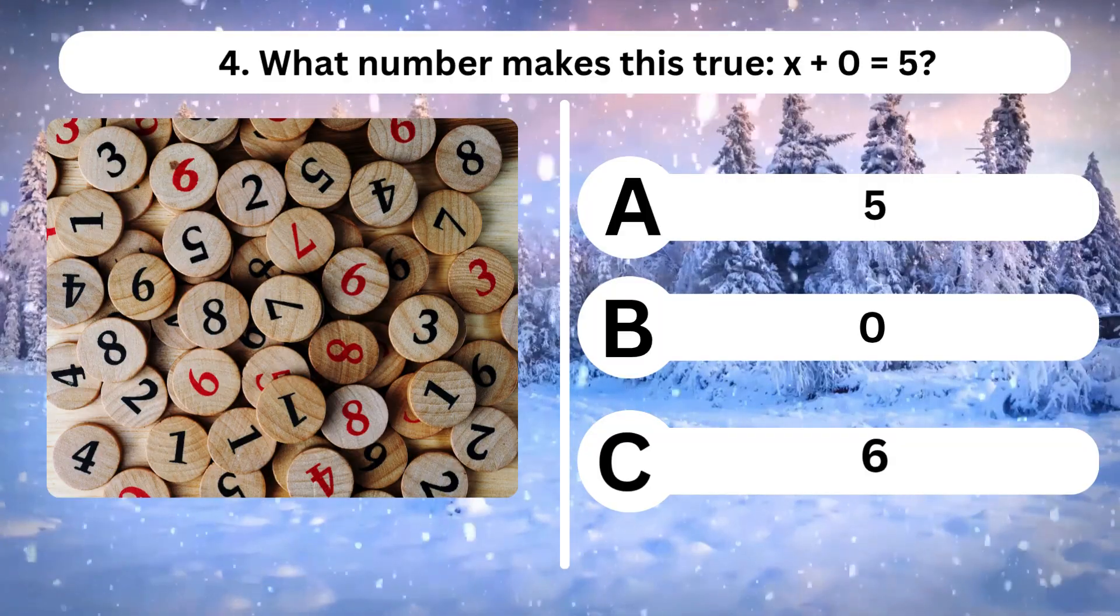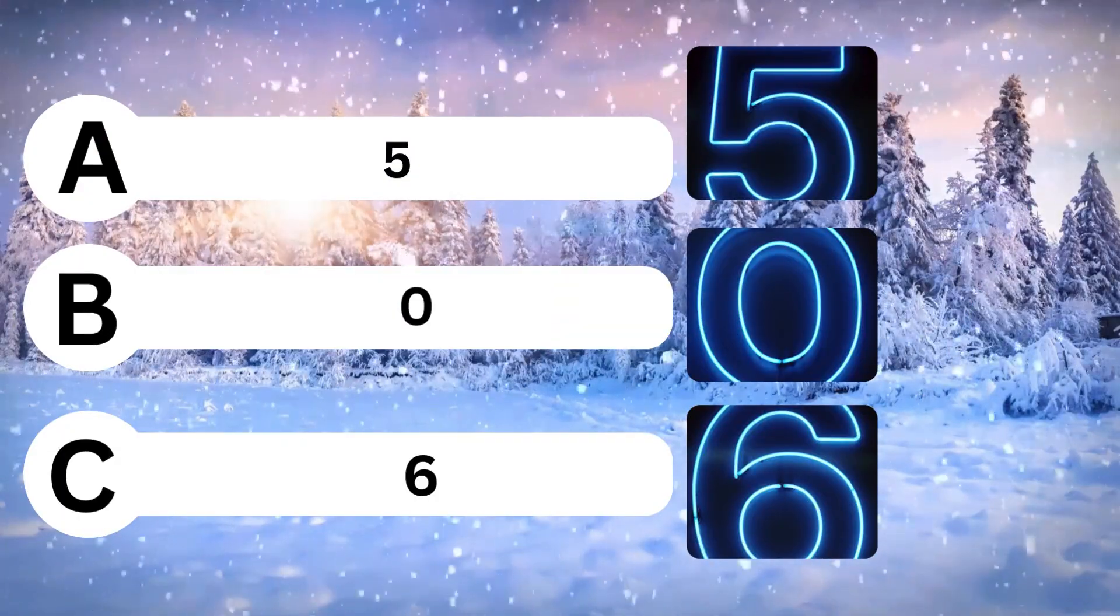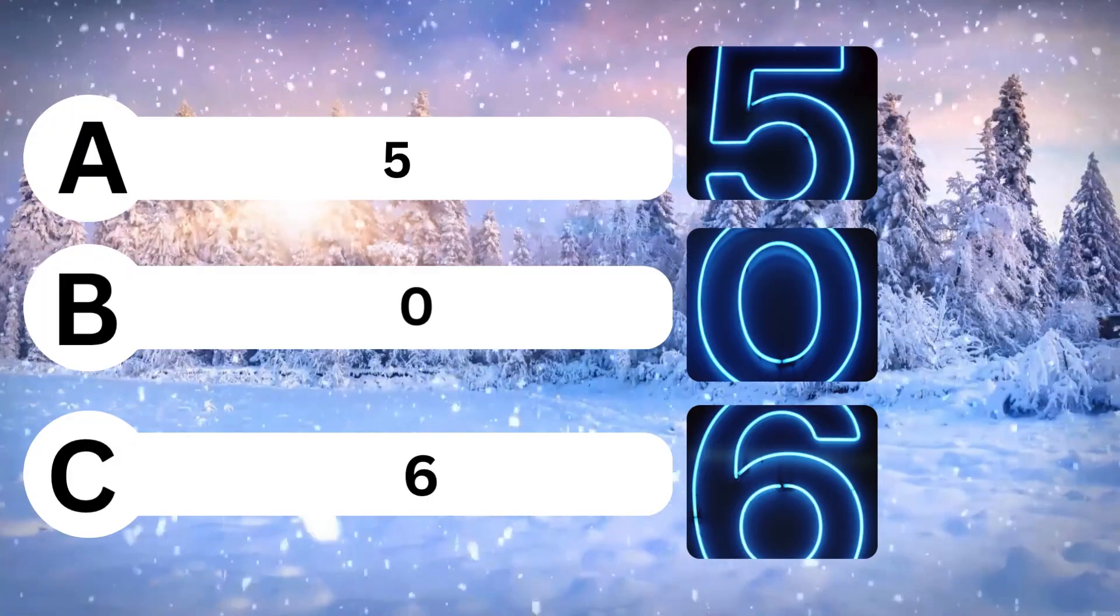Question 4. What number makes this true? x plus 0 equals 5. A. 5. B. 0. C. 6.